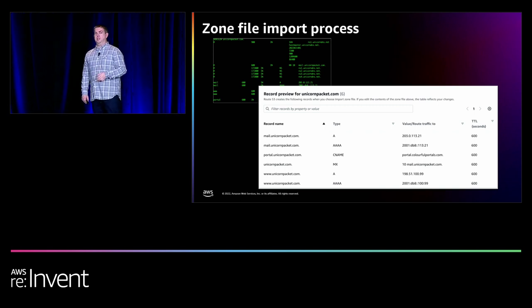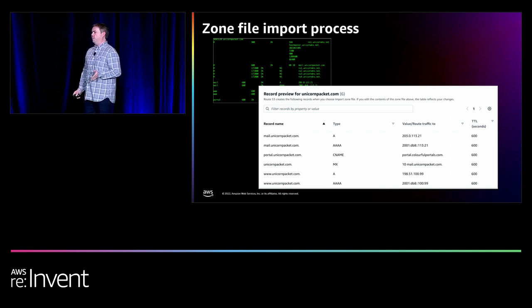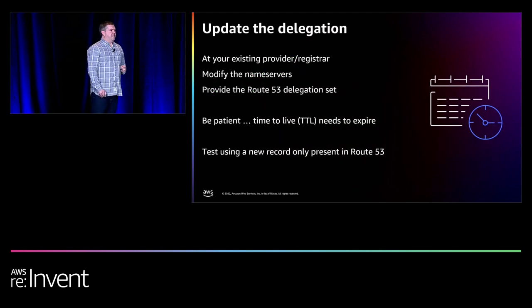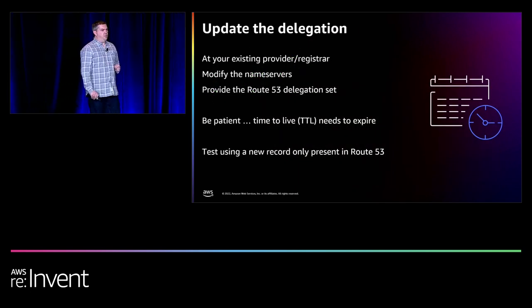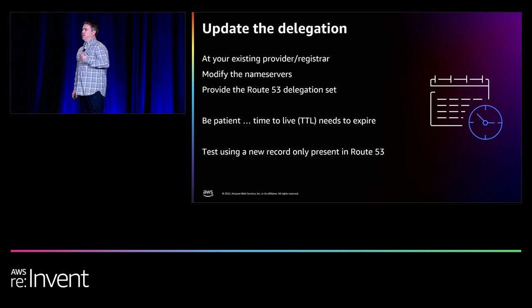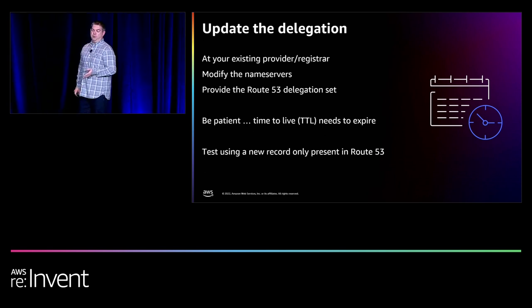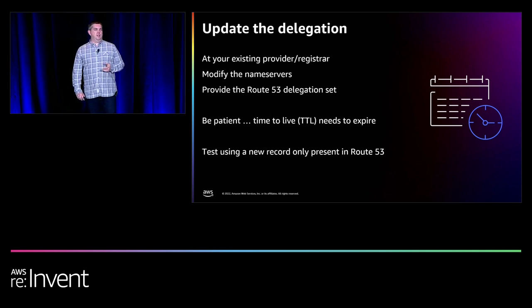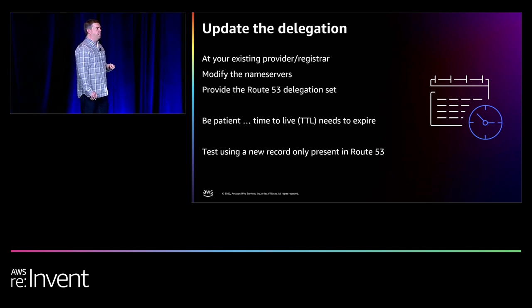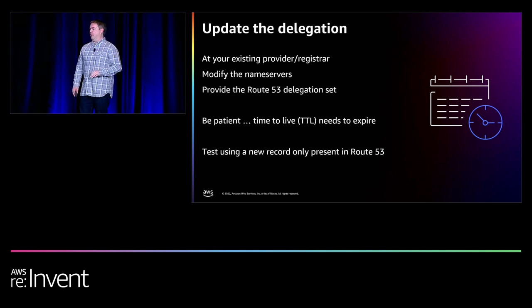So we've got the theory behind us — let's actually set up a routing policy. Here's the current architecture of the Unicorn Packet website, built with resilience in mind, hosted in the London region EU-West-2. We've got an application load balancer distributing traffic across two availability zones. The Unicorn Packet website has become very integral to the business, and they've decided to set up a static version of the website in a different region — EU-West-1 in Ireland — on an S3 bucket. We're going to configure failover.